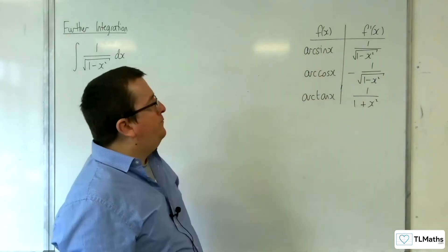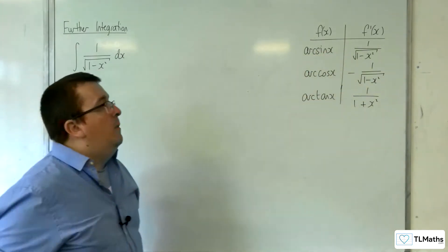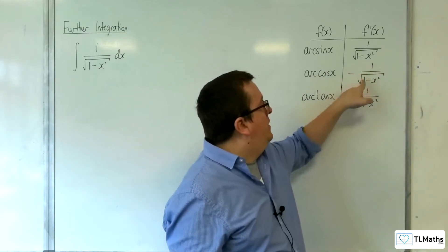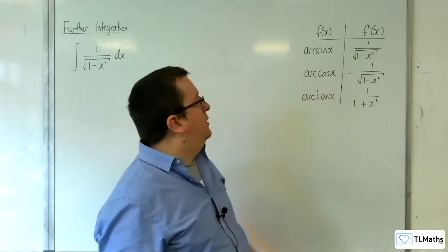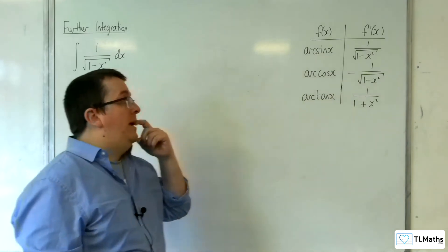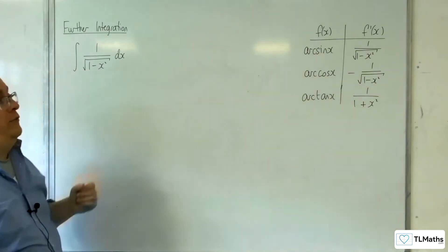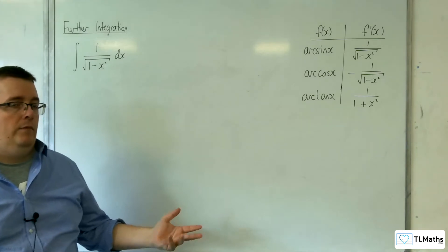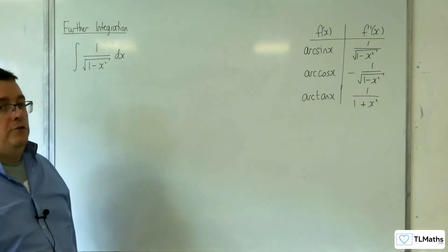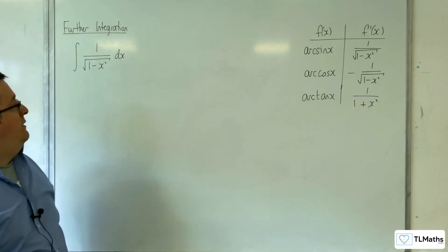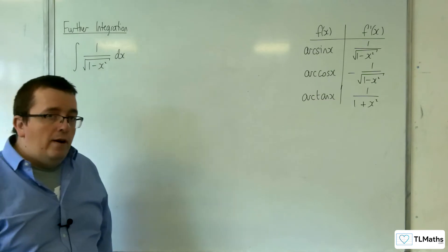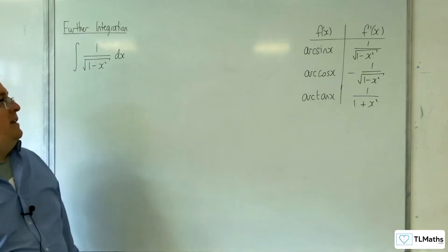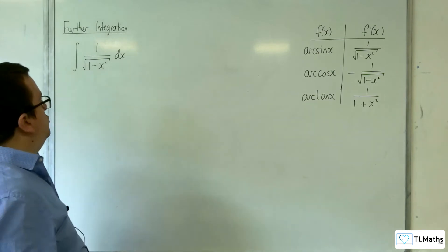However, you might also be thinking that this integrates to arc cosine x. So it could be minus arc cosine x plus c. Actually, either of those two results are perfectly fine. And to arrive at those results, it depends upon the way that you integrate this.